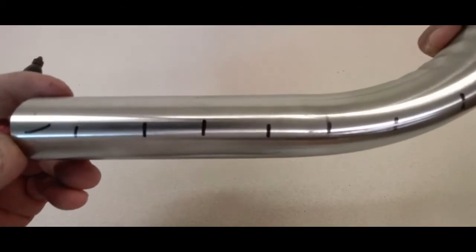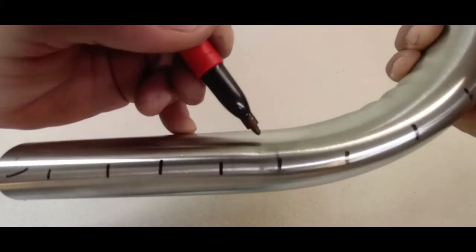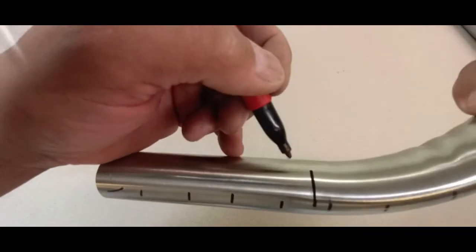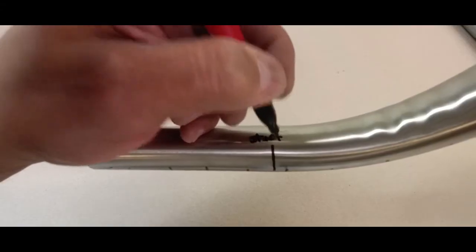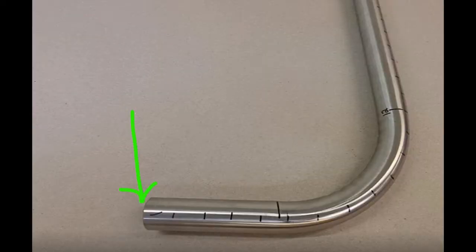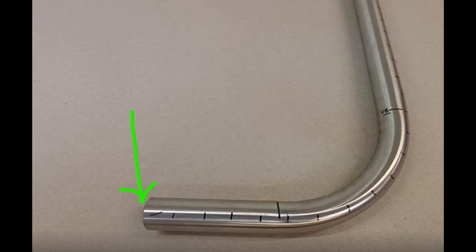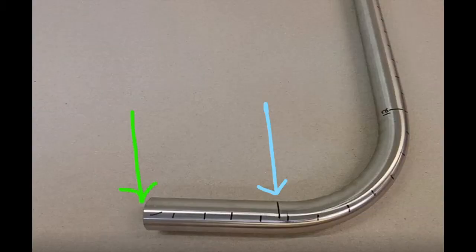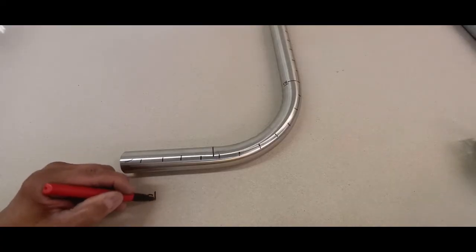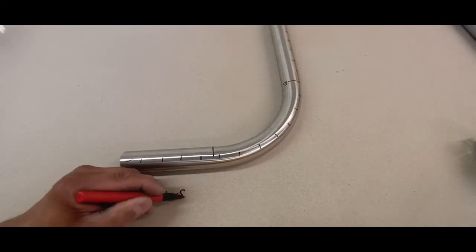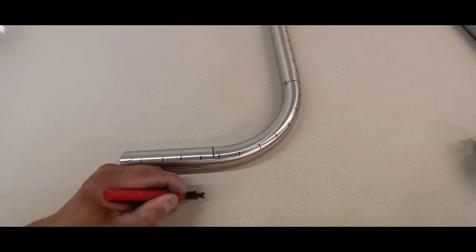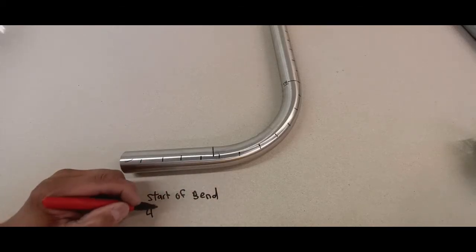Okay now we're going to look for the start of the bend. That's our first step in calculating. Okay there are one inch increments. Now you see the slight deformation there, that's the actual start of the bend and we need to know that. So now we're going to count from the end of the pipe: one, two, three, four. Four and about three quarter. So that's the amount of material needed to the start of the bend. Four and three quarter inches.